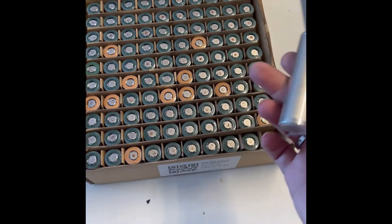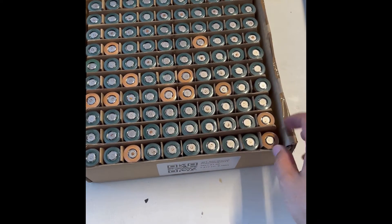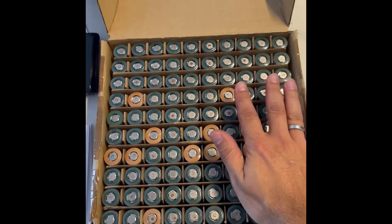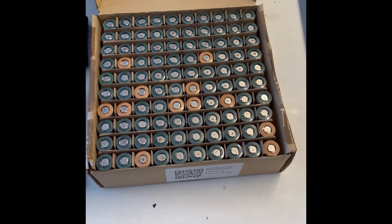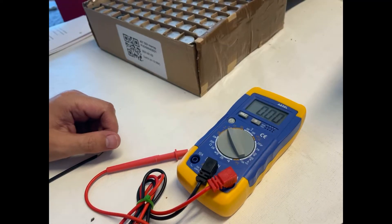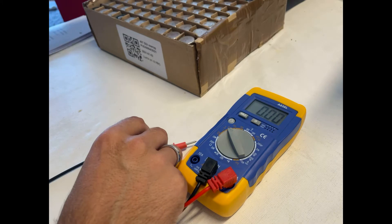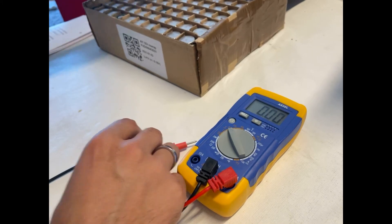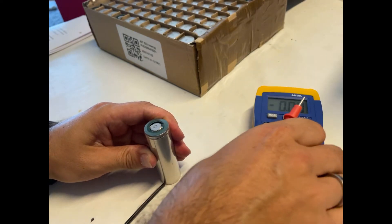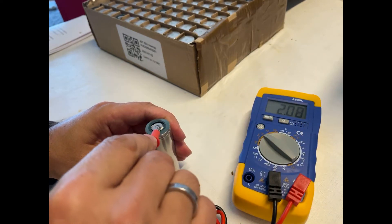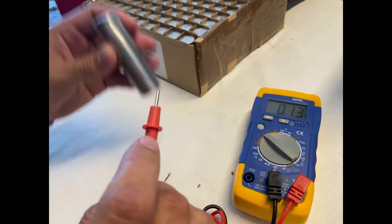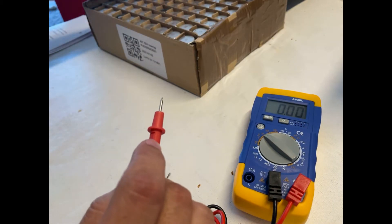I'll check the voltage on everyone to see that they are all equal and then start the assembly. So I'm checking the voltage of every cell. Hope you can see it. Almost all of them have 3.44, not this one.